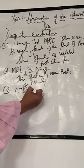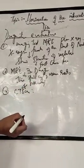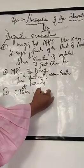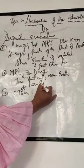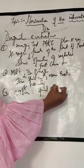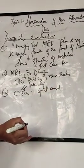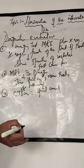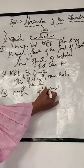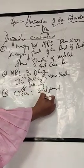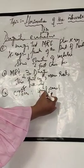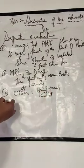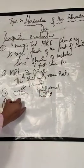The third imaging test is a CT scan. With a CT scan, we get the shape and size of the spinal canal, its contents and structure.